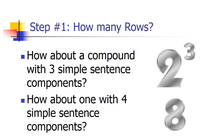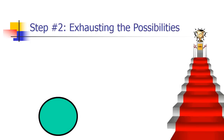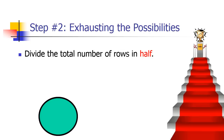How about a compound with four simple sentence components? As you can guess, that's going to be 16. Now let's move on to the second step: exhausting all the possible truth value combinations given all your simple propositions.